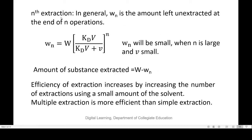Similarly, after multiple extractions — say at the nth step — the amount left unextracted is Wn, and the expression takes the form: Wn = W × [KD × V / (KD × V + v)]^N. For more substance to be extracted, the amount left unextracted should be very small. This is achieved when N is large and the volume of organic solvent used each time is small. The amount extracted is W minus Wn, and the efficiency of extraction increases by using a larger number of extractions with small amounts of solvent. Multiple extraction is therefore more efficient than single extraction.